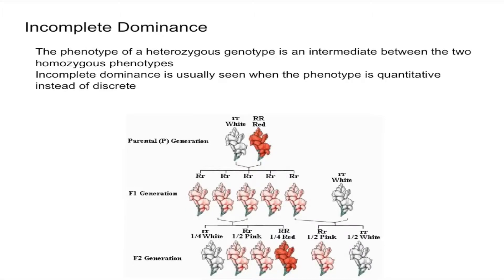So in this video I'm going to explain what incomplete dominance is. In genetics, incomplete dominance is when the phenotype of a heterozygous genotype is an intermediate between the two homozygous phenotypes.